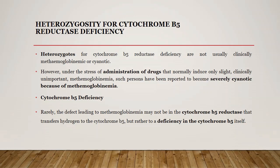These heterozygotes are generally clinically stable — they do not have methemoglobinemia or cyanosis. However, if you administer certain drugs which in normal individuals induce only genetically unimportant methemoglobinemia, in such patients it gives rise to severe cyanosis. We should also talk about deficiency of the substrate cytochrome b5 — since reduced cytochrome b5 helps in reduction of methemoglobin, a deficiency of cytochrome b5 will lead to a similar manifestation as cytochrome b5 reductase deficiency.